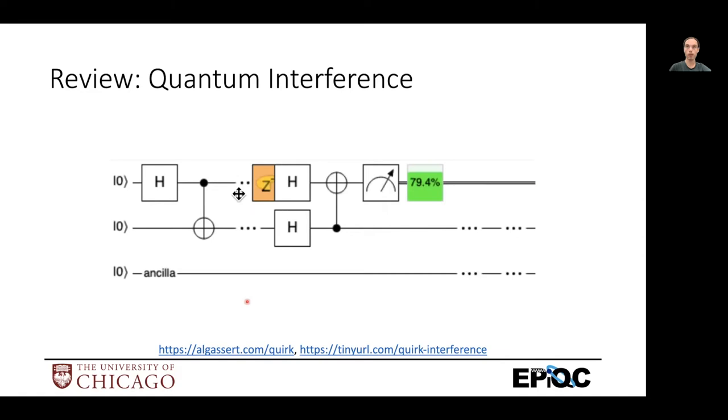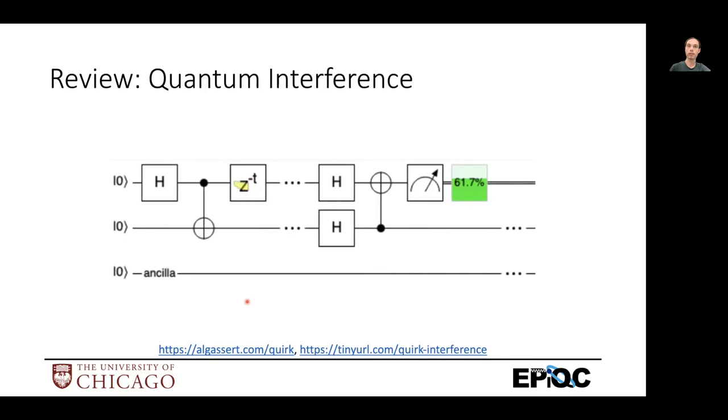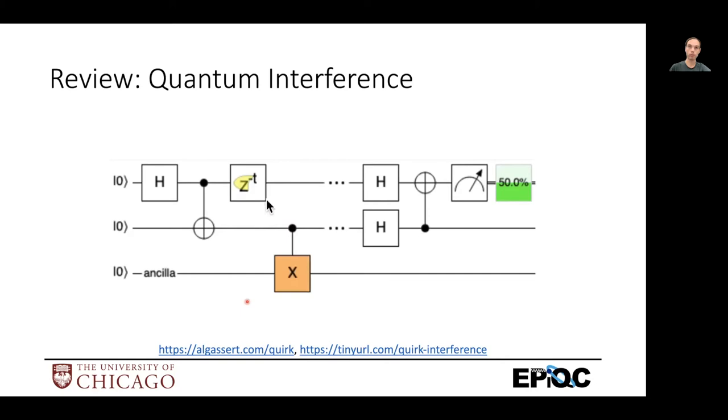So here it's showing the same thing with a variable phase. So as the phase changes, the output measurement changes. But when you measure it with the CNOT to extract the intermediate result, it completely ruins the algorithm. And we get a 50-50 chance of measuring a one, which gives us no information, no matter what the angle is on that phase.